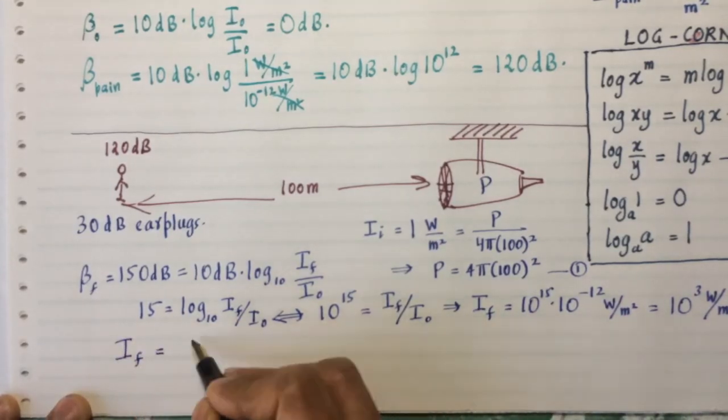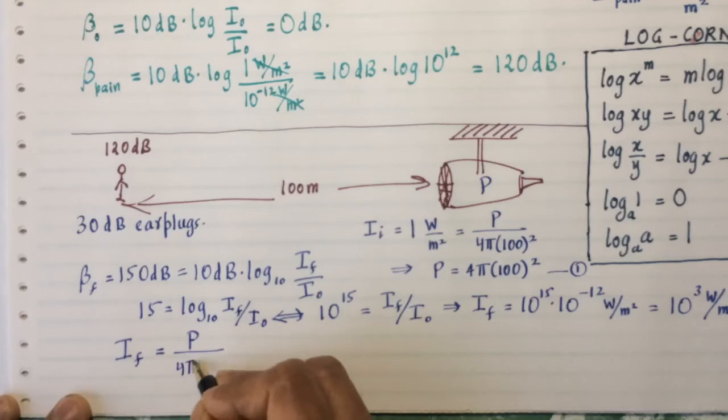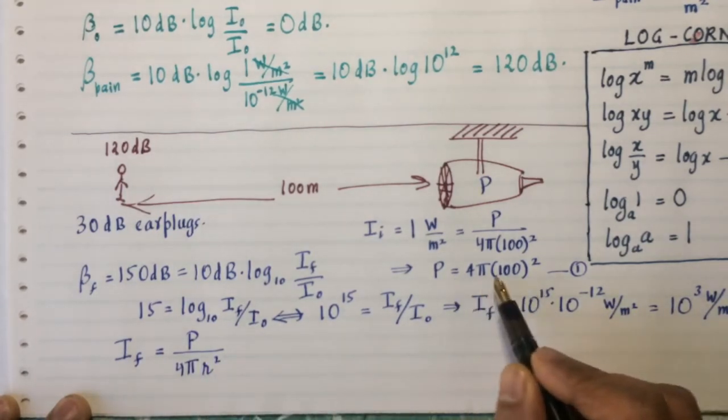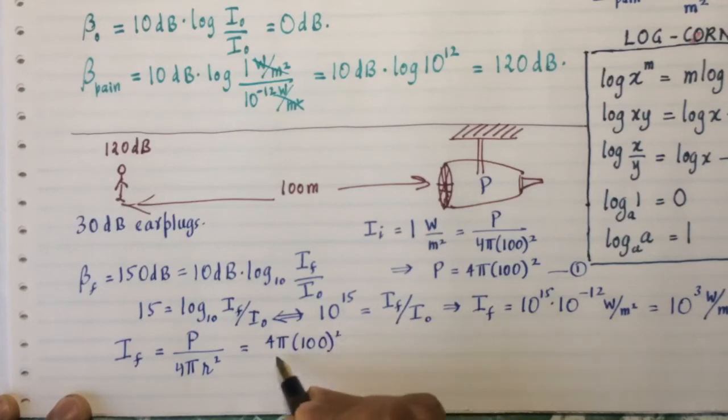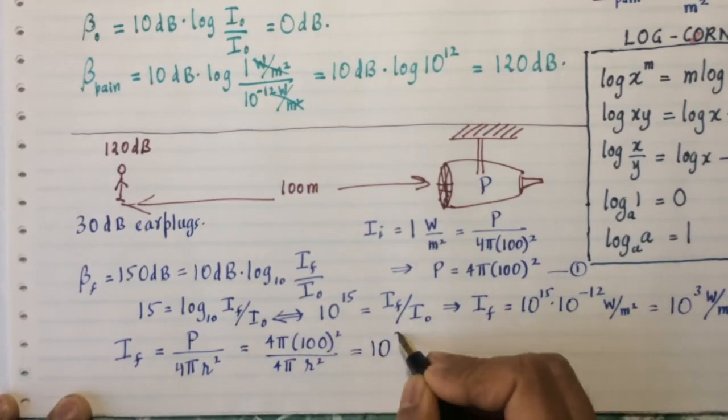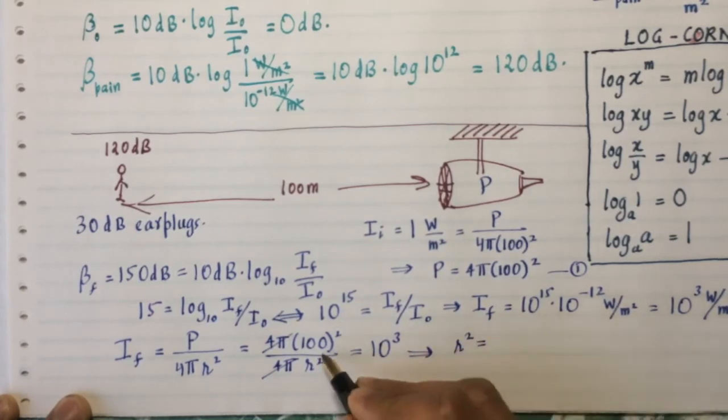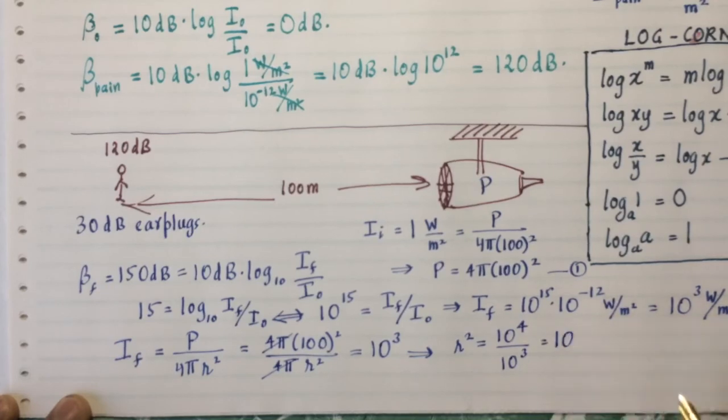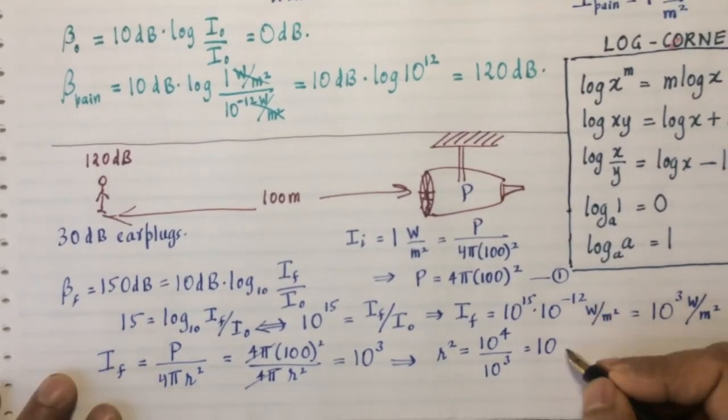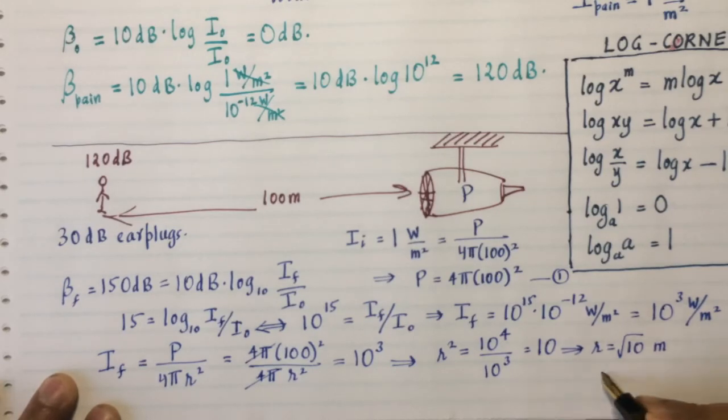Now let's find out, the last thing we need to do is find out where you can be. So the final intensity I_F is also equal to the power of the jet engine, which remains the same regardless of where you are, divided by 4π times the new distance squared. Now I've already told you what P is, so let me put that in there. It's 4π times 100² divided by 4π times r². And all that has to be equal to I_F, which is 10³. Now that tells me that r² equals 100², which is 10⁴, divided by 10³. That's almost amazing. r² is 10, that's 10 meters squared, which means r is the square root of 10 meters. Square root of 10 is approximately π, π meters. And π meters is about 10 feet. So you've gone from being 330-something feet from the jet engine, where you experience pain, to now being just 10 feet from the jet engine.